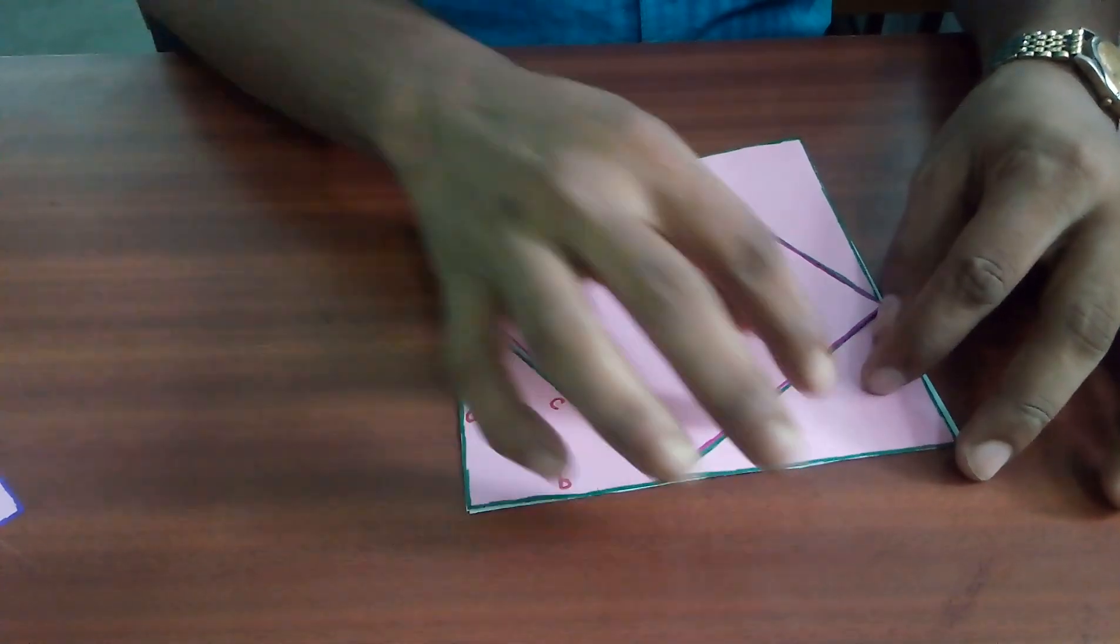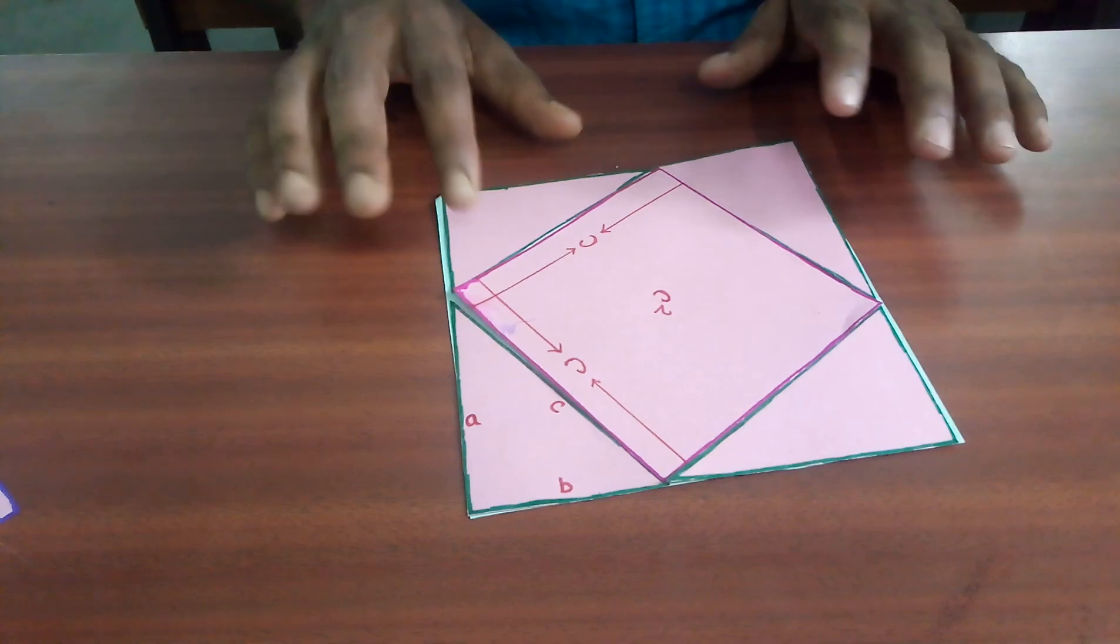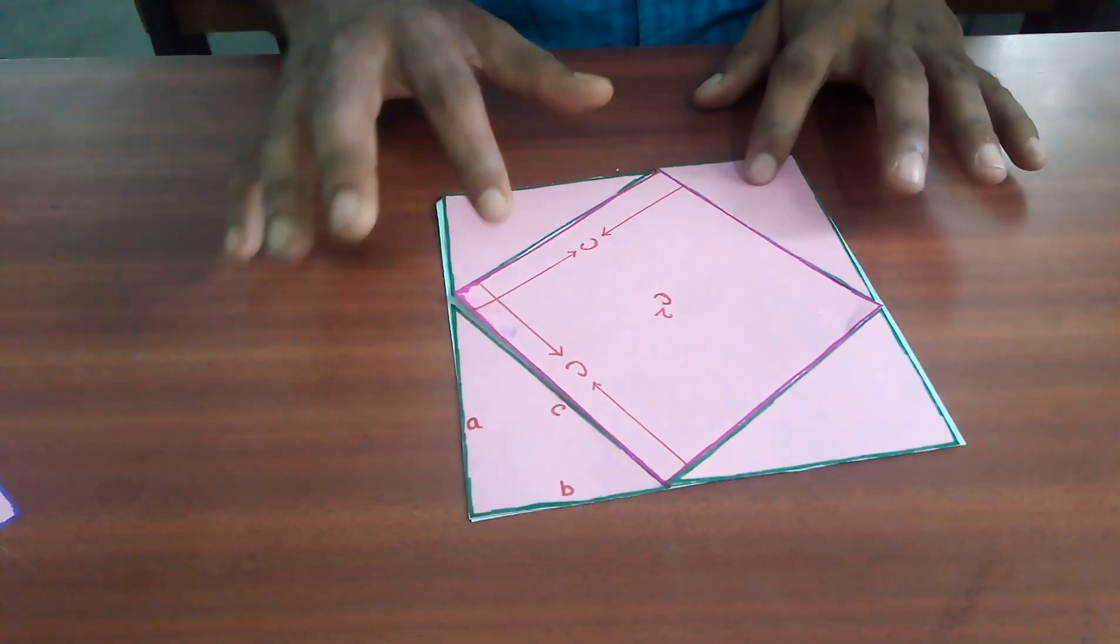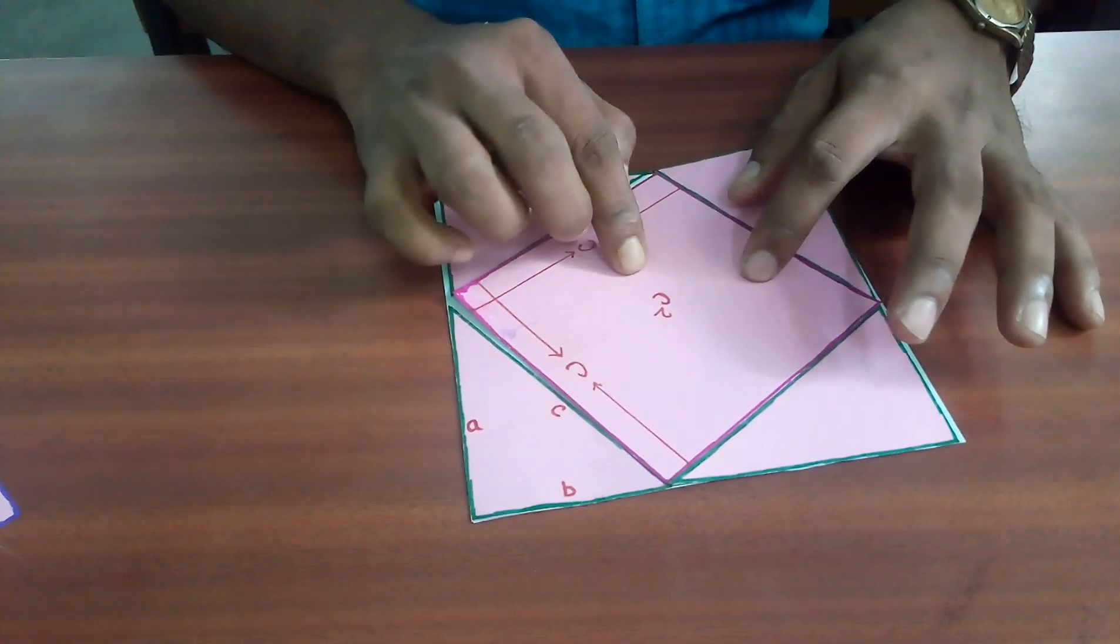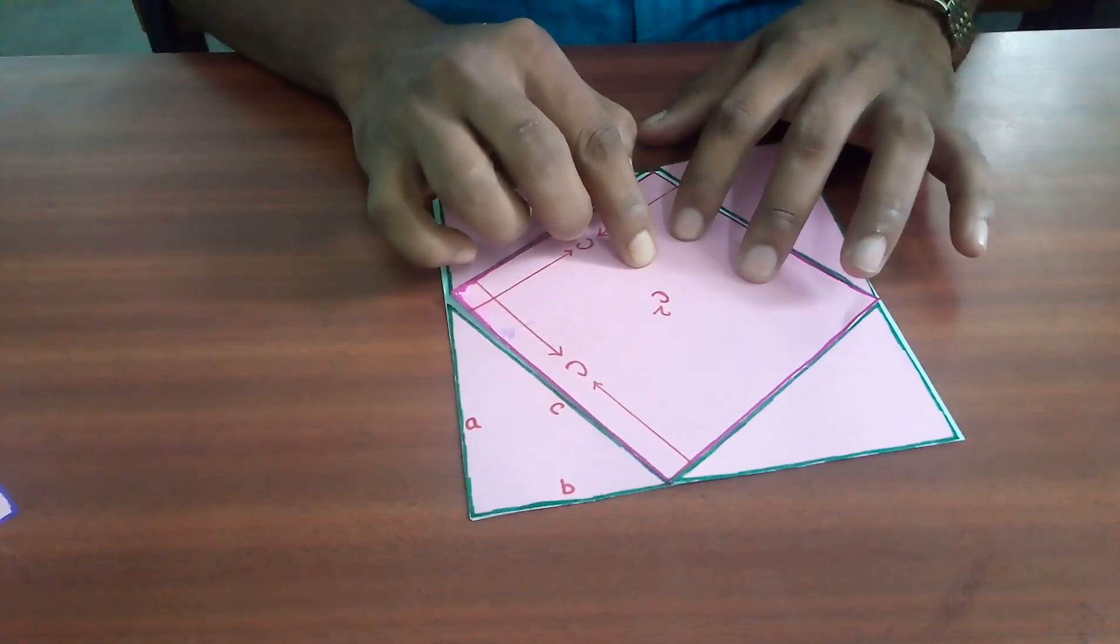Now, here the area of four triangles is same as the previous one. So, we can take this four as constant. So,